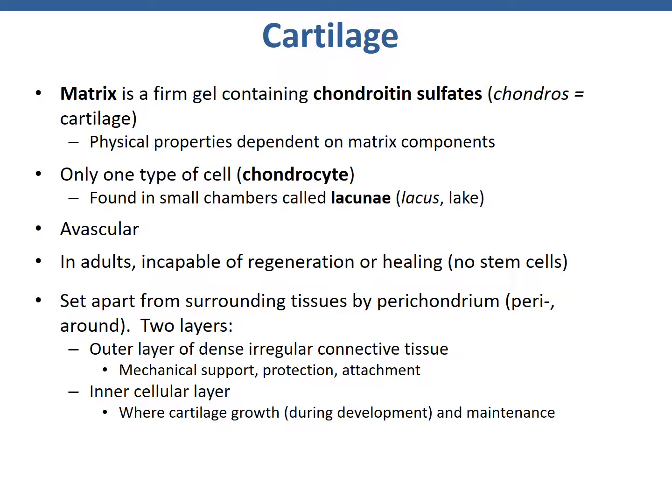The first type of tissue we'll talk about in the skeletal system is cartilage. Cartilage is a type of connective tissue, and its matrix is a firm gel containing chondroitin sulfates. The physical properties are dependent upon the matrix components, as there are many different types of cartilage. However, there's only one type of cell found inside cartilage, and that is the chondrocyte. These are found in small chambers called lacunae. Cartilage is avascular.